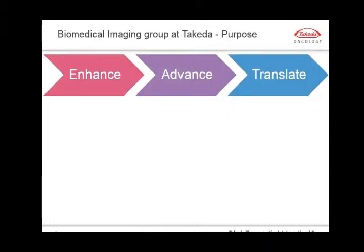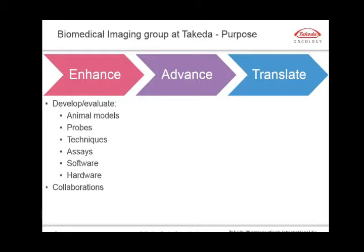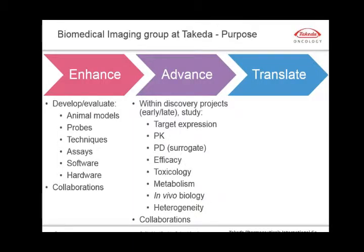The activities we do within our group fall within one of three categories: we either enhance, we advance, or we translate. In terms of enhancing our capabilities, we constantly try to develop or acquire new animal models, imaging probes, or imaging techniques, develop new assays to complement our imaging data, and acquire new software and hardware. In terms of advancing early or late discovery projects, we use imaging in many different ways — addressing questions related to target expression, pharmacokinetic or pharmacodynamic data, efficacy, toxicology, metabolism, mechanisms of action or resistance.